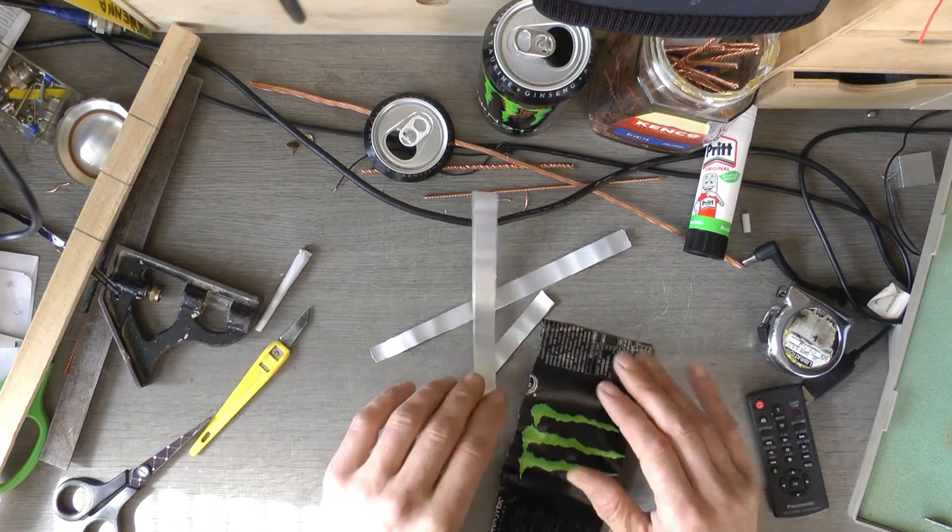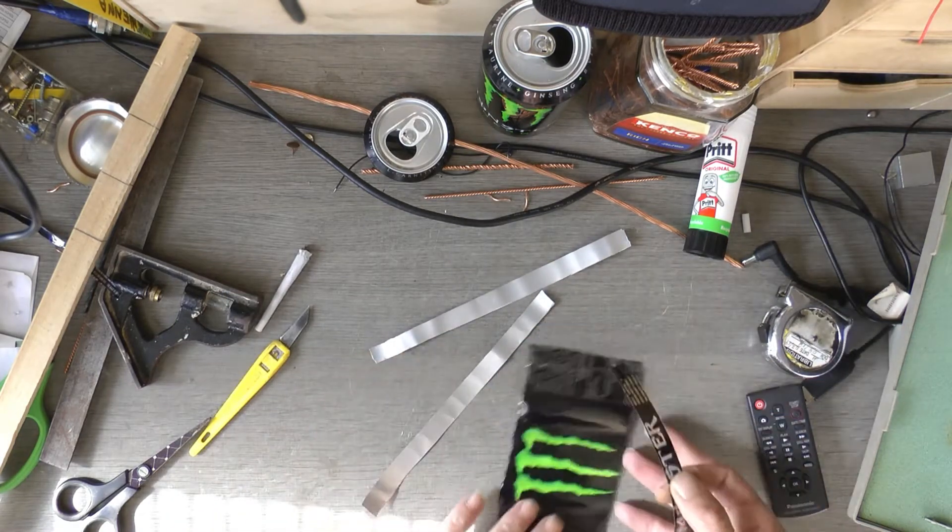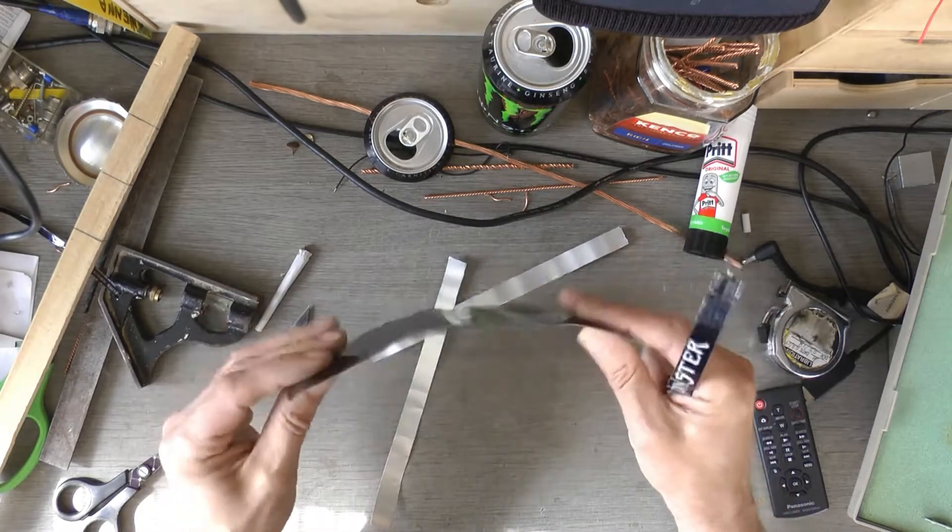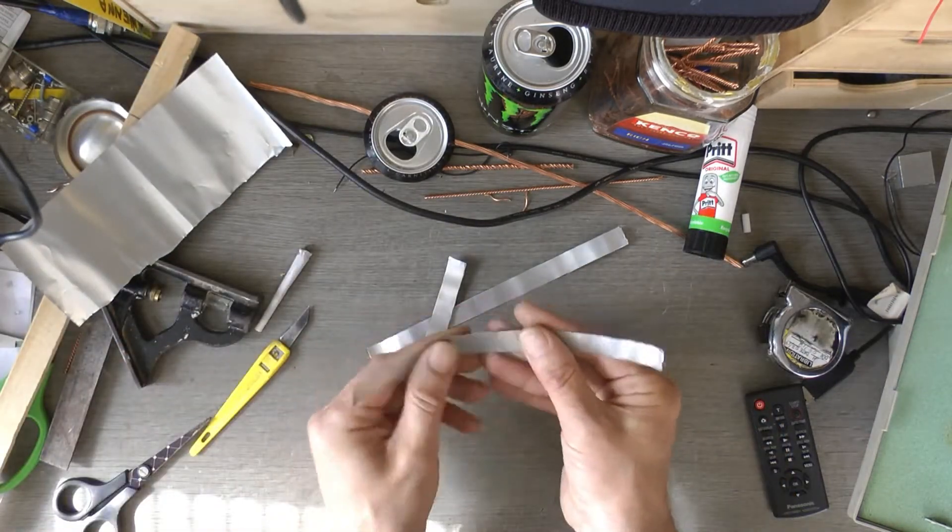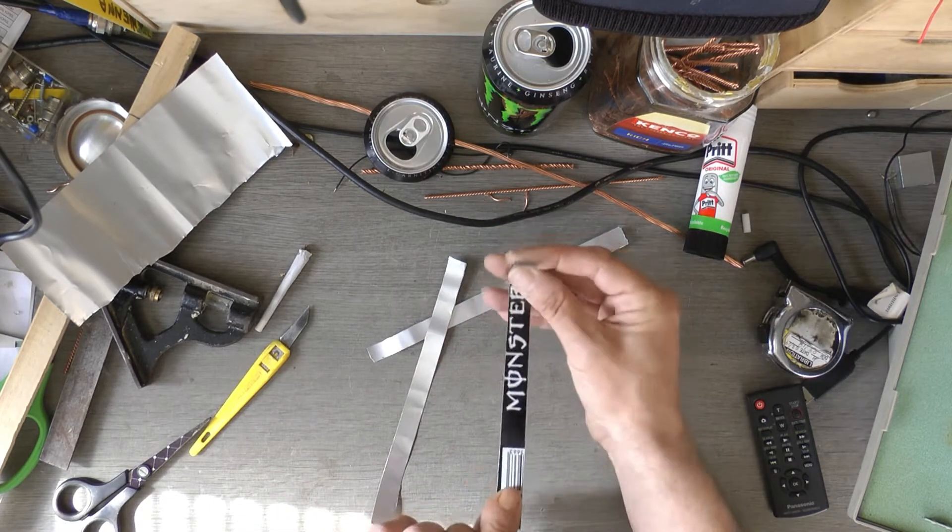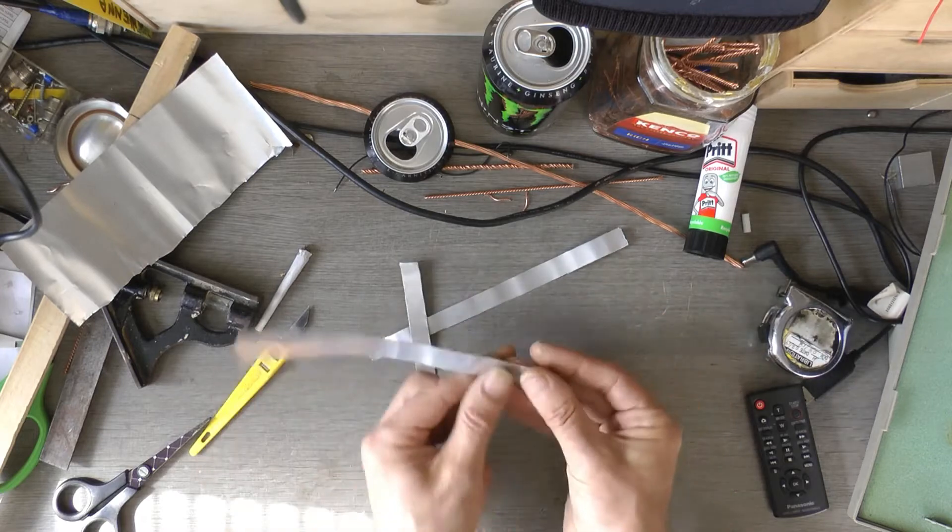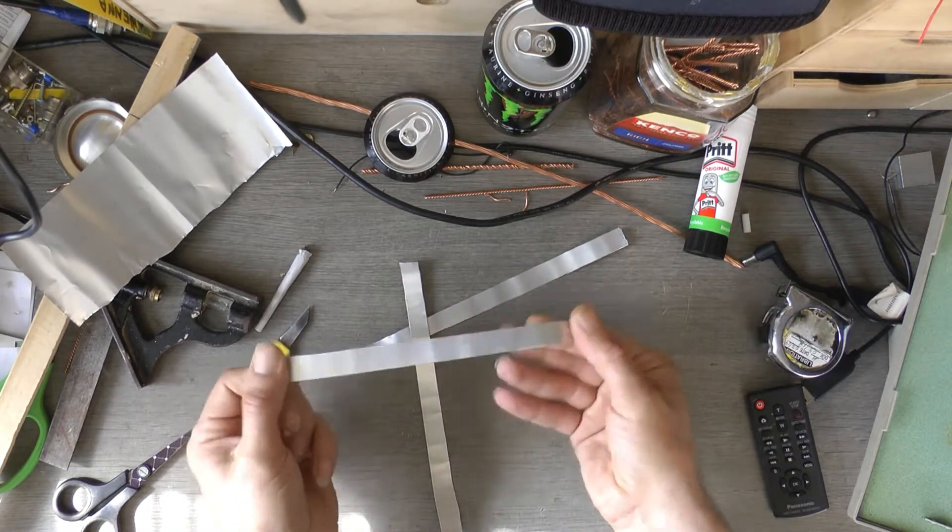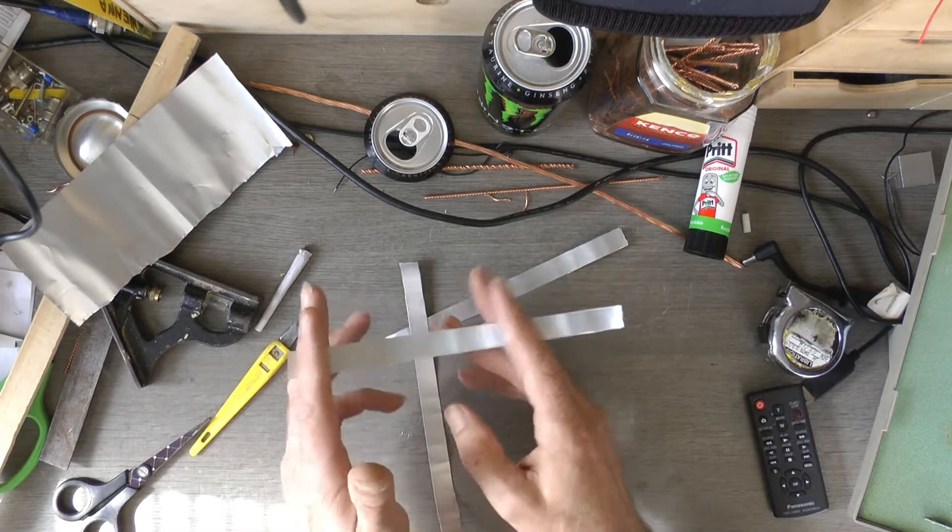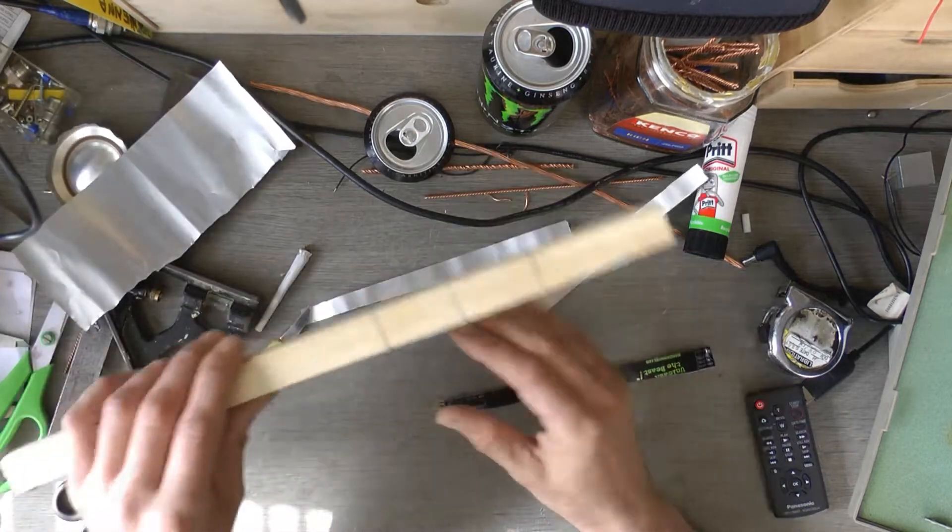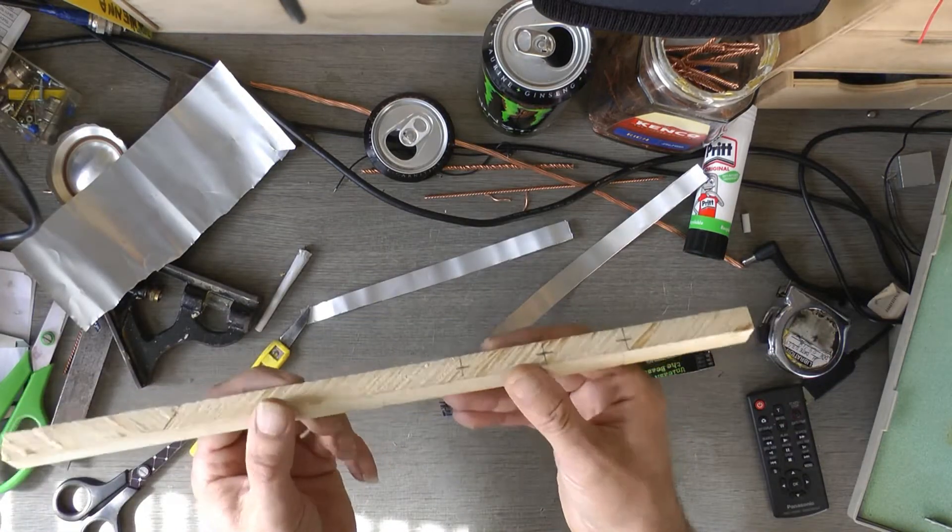Right, I've cut three strips out of this Monster can, about three quarters of an inch wide. There's your elements for your antenna. Obviously I've got to cut them accordingly, and here's a bit of batten I've cut to size for it.